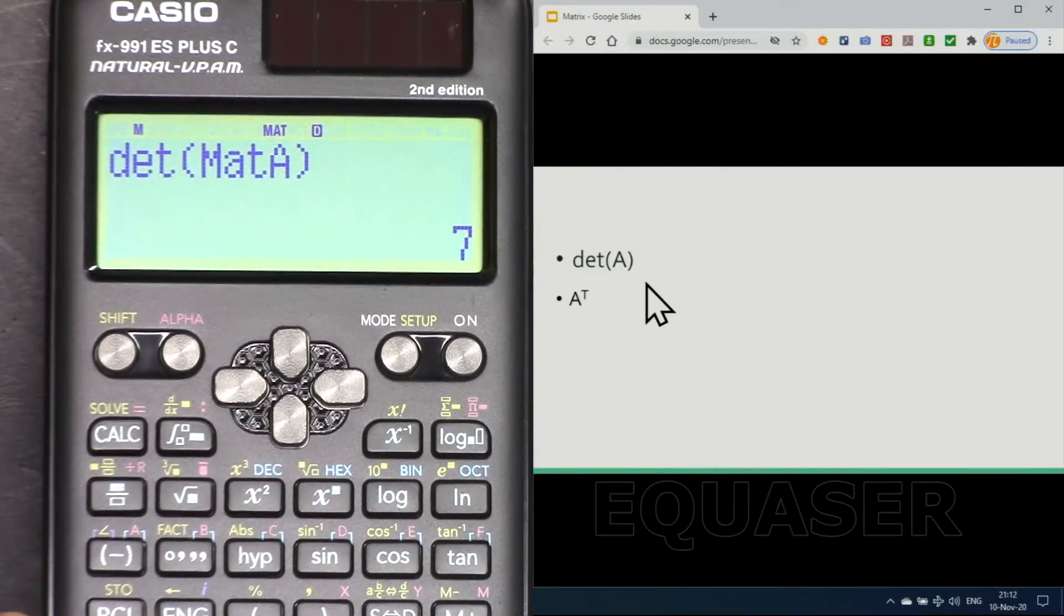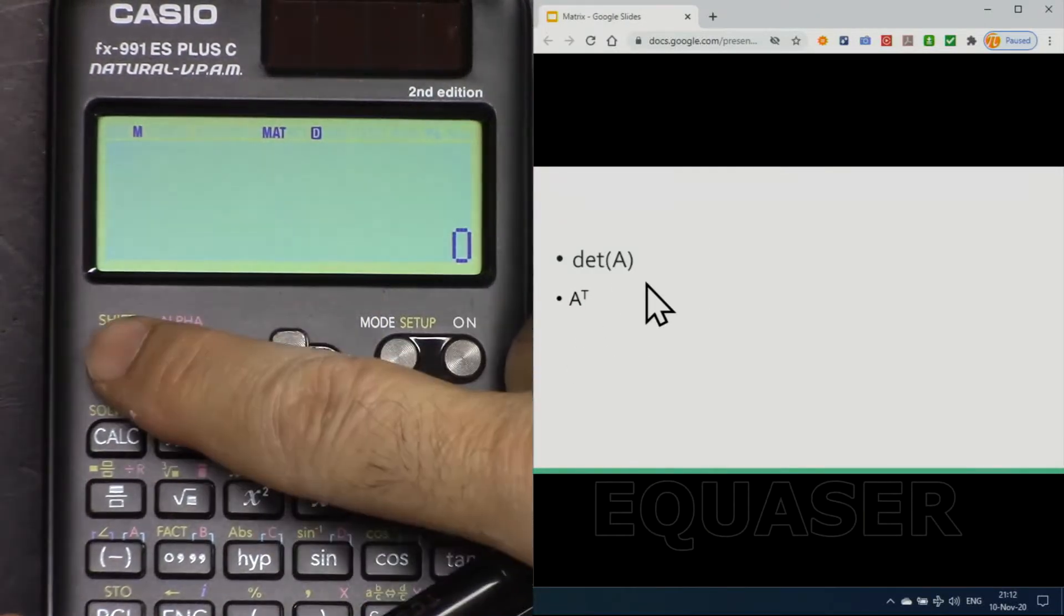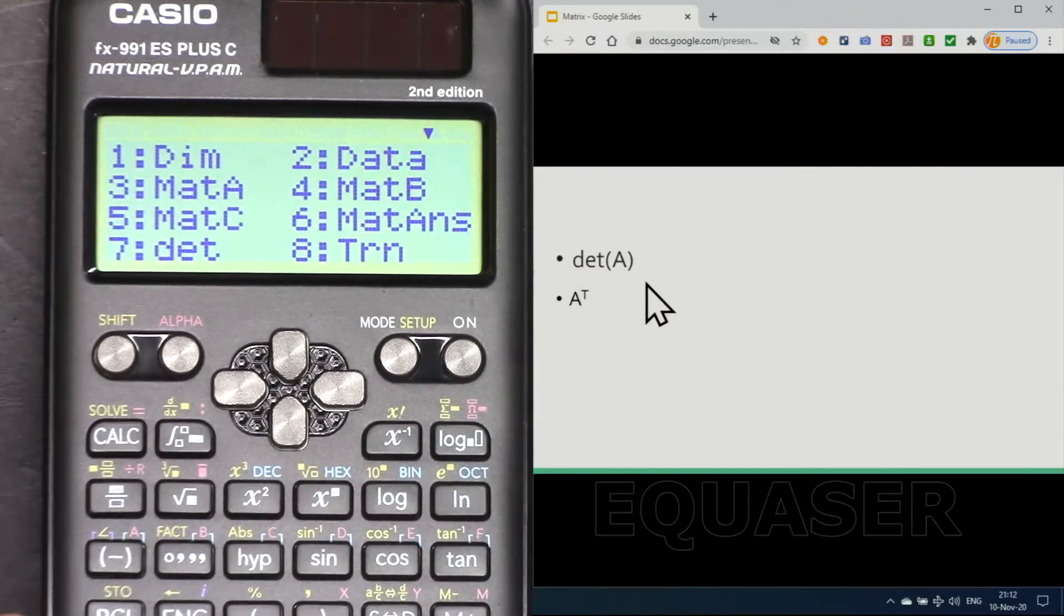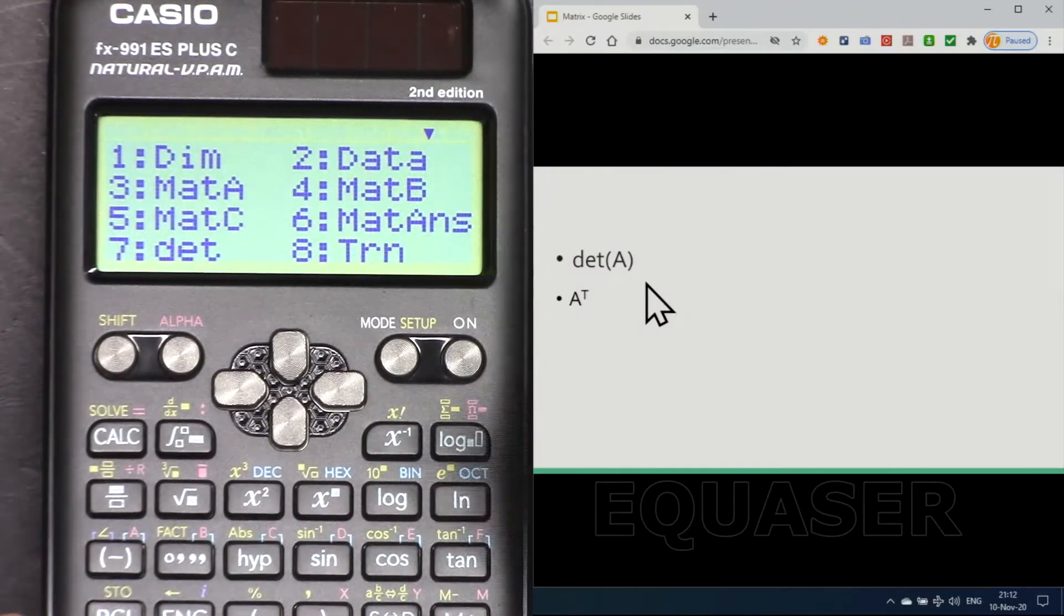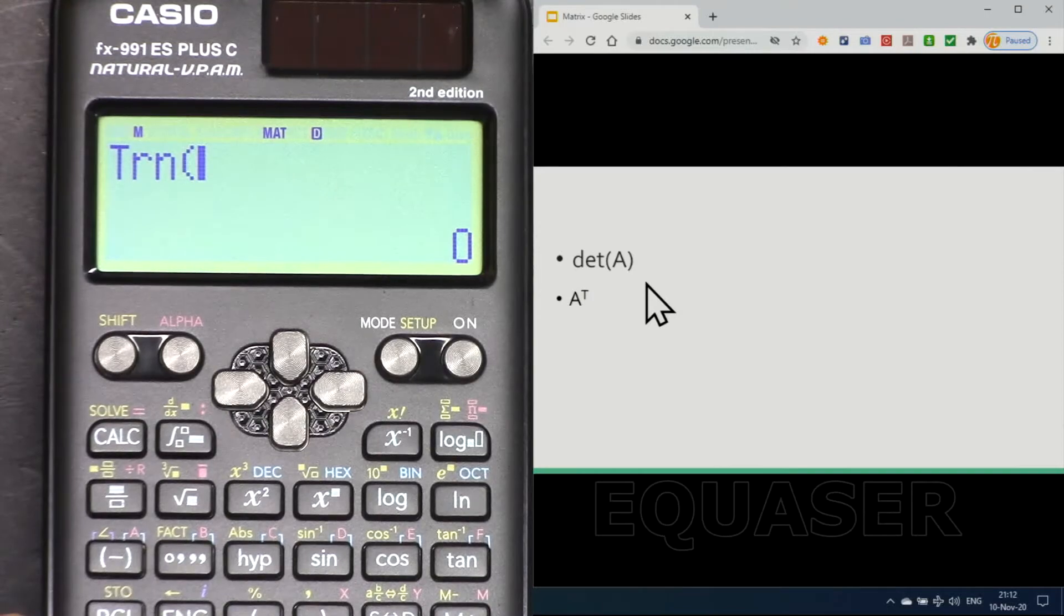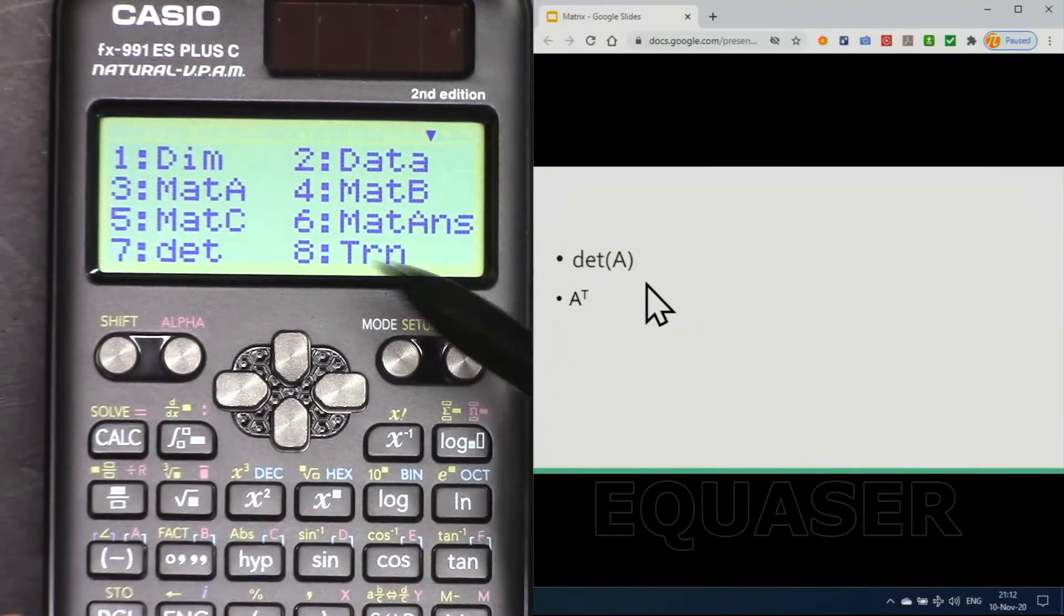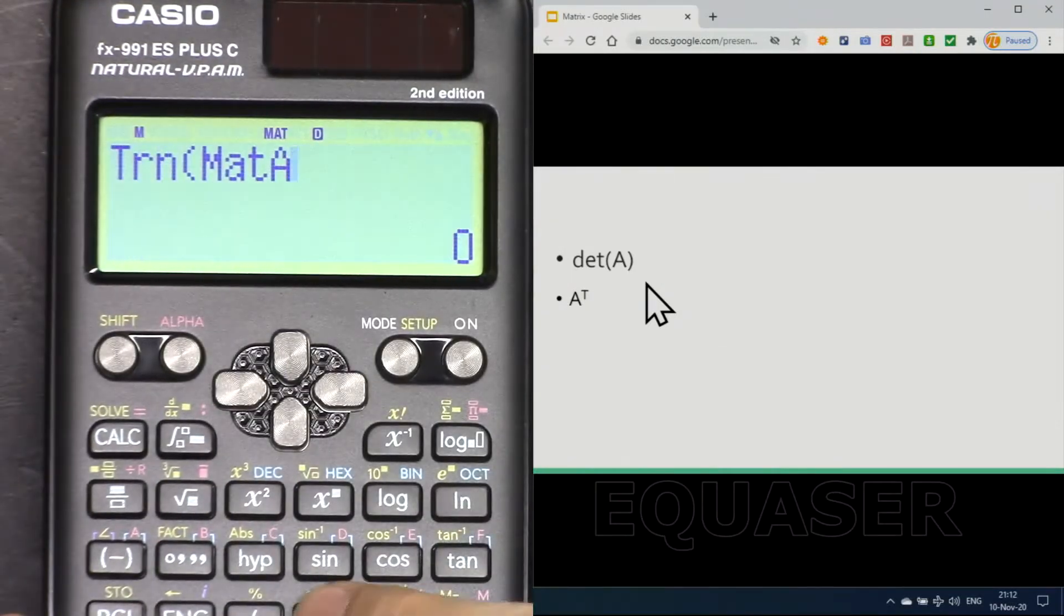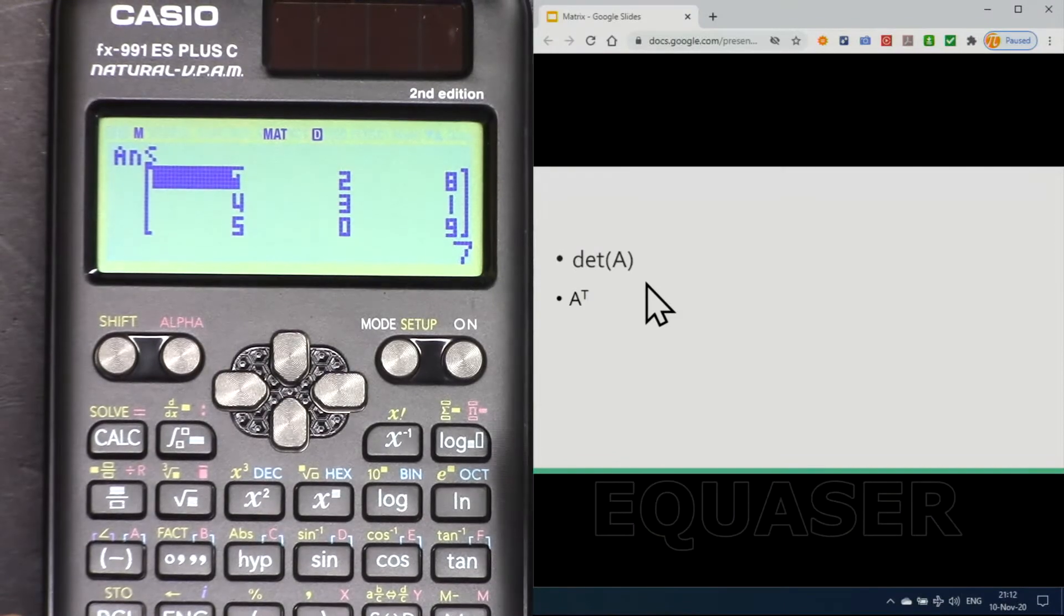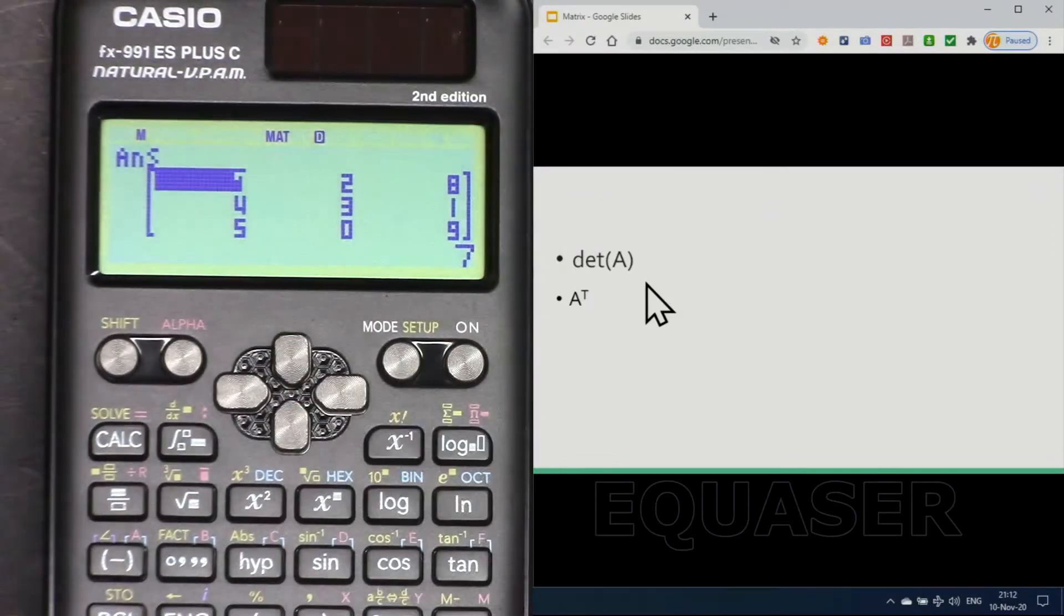And then transpose of matrix A. So bring shift 4 and then go to transpose 8, transposition, shift 4 matrix A, matrix A 3, close it. Transpose the matrix: all the rows and columns will be switched.